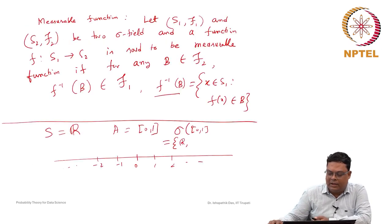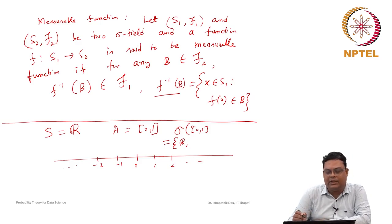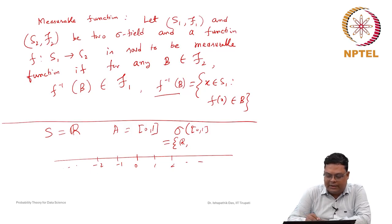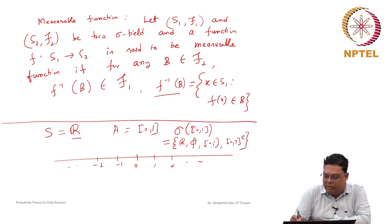Since we do not want to go into that complexity, we want some particular sigma field that is actually useful for us. Here, if you consider the sigma field generated by the set containing the element 0, then by property 1, R must be in the class, and its complement — the null set — must also be there. The set A must be here, and its complement, which is the complement of [0,1], must also be there. Taking the union gives R. So this is the smallest sigma field generated by A.